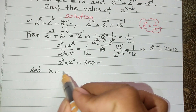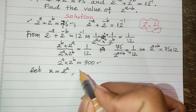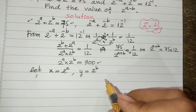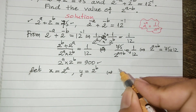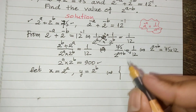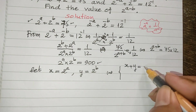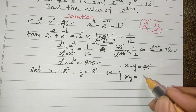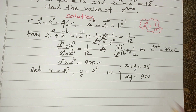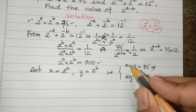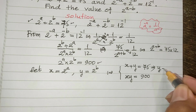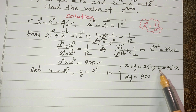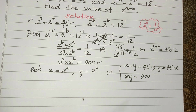Now I let x equal 2 to the power a and y equal 2 to the power b. From our equations we get x plus y equals 75 and x times y equals 900. I take x to the right-hand side to get y equals 75 minus x.